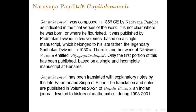There is another work of Narayana Pandita called Bija Ganitavatamsa. Only the first portion of this has been published, based on a single and incomplete manuscript. Ganita Kaumudi has been translated by Paramananda Singh with explanatory notes; it was published in volumes of Ganita Bharati, a journal of history of mathematics — covering mostly Indian but also other cultures. He was completely devoted to that history and published this between 1998 and 2001. It is a very big work.